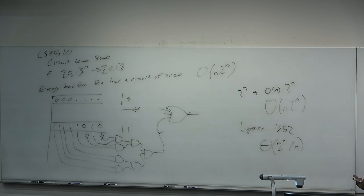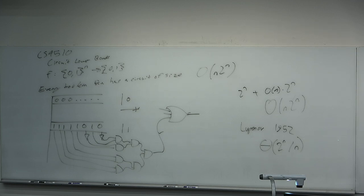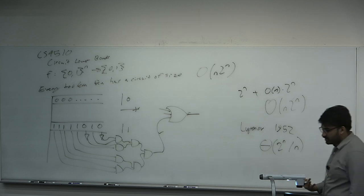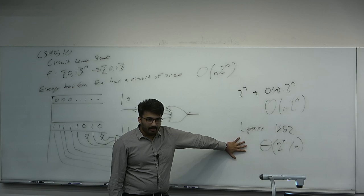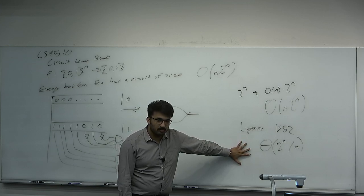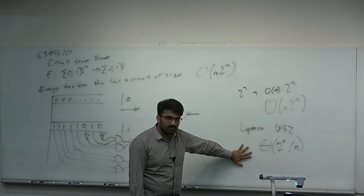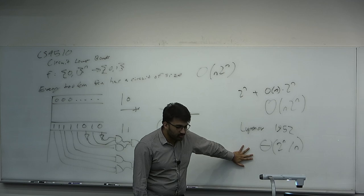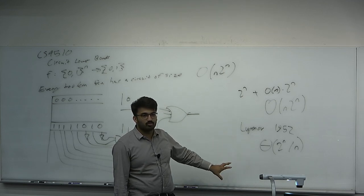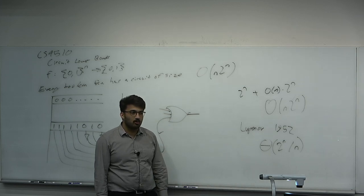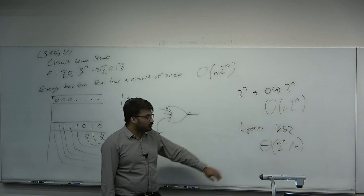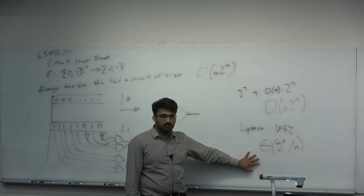The proof will be non-constructive. We're going to estimate the number of Boolean circuits of a certain size and estimate the number of Boolean functions, then show there are way more functions than circuits — so certainly not all of them can have small circuits. Fascinatingly, most circuits require exponential size, yet we do not have a single example of an explicit Boolean function family that requires exponential size circuits.